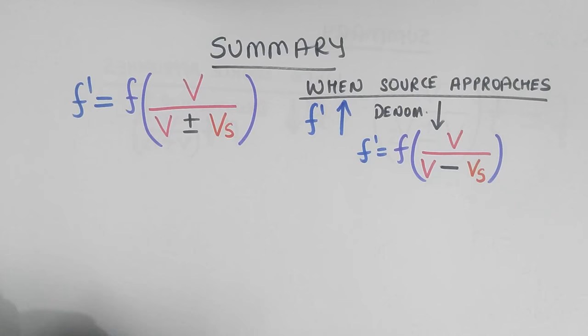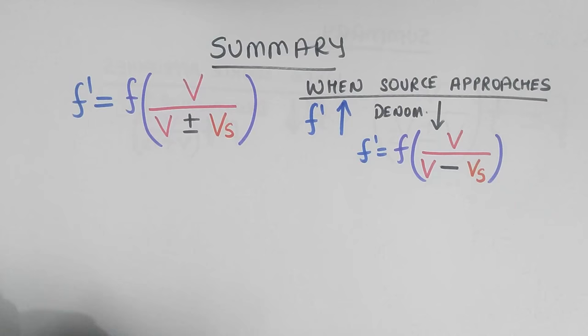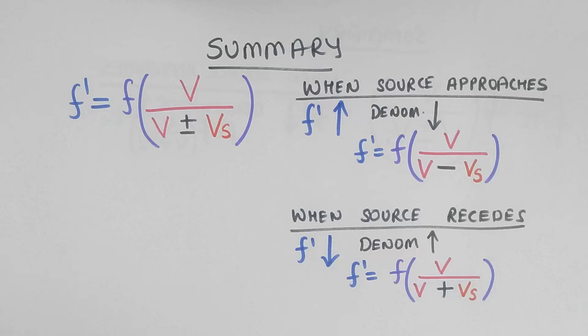Hence, we get a minus sign. Similarly, when the source recedes away, we must get a plus sign. Hope that made it easy.